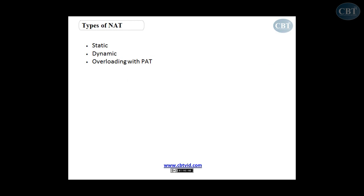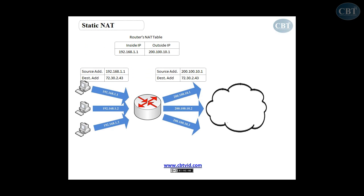What are the different types of NAT? We have static NAT, dynamic NAT, and NAT with overloading — also called PAT (Port Address Translation). Static NAT maps a private IP address to a public IP address on a one-to-one basis. On the left side of this picture is the local LAN, and on the right side is the internet. When a device on the inside wants to send a packet out, its source address is a private IP such as 192.168.1.x.